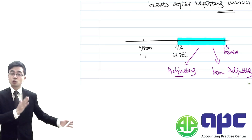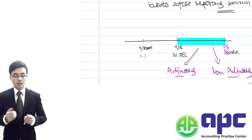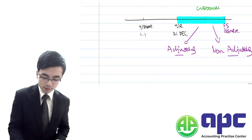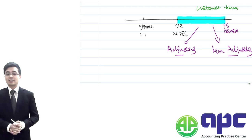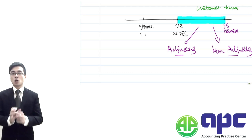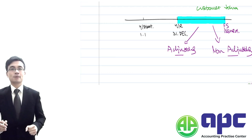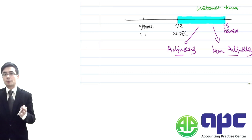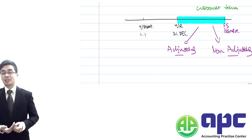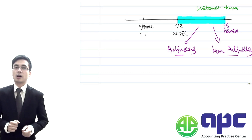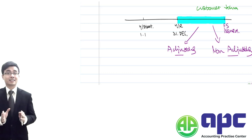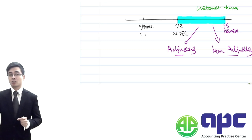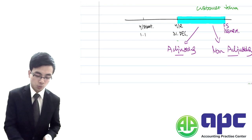How do we determine whether to adjust or not? For example, if a customer, John, informs us after the year-end that he has gone bankrupt and cannot afford to pay the $1,000 he owes — if we had included a receivable balance for John outside the year-end, this new information changes our assumptions. As a result, we reduce that receivable amount that John can no longer afford. That is what we mean by an adjusting event.